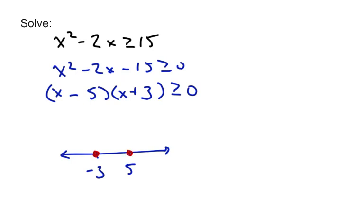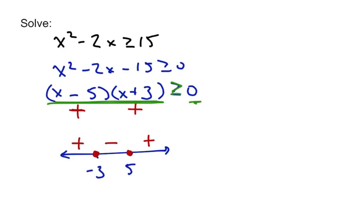Notice I put the order differently this time — it's a number line, so we need the smaller number first and the bigger number second. Pick a number on the far left interval: negative 1 billion minus 5 is negative, and negative 1 billion plus 3 is negative, so the product is positive. Pick something in between like 0: 0 minus 5 is negative, 0 plus 3 is positive, so everything there is negative. Pick something very positive: 1 billion minus 5 is positive, 1 billion plus 3 is positive, so positive times positive is positive. When is this expression greater than 0? That's where they're positive. So our two solutions are x less than or equal to negative 3, or x greater than or equal to 5.